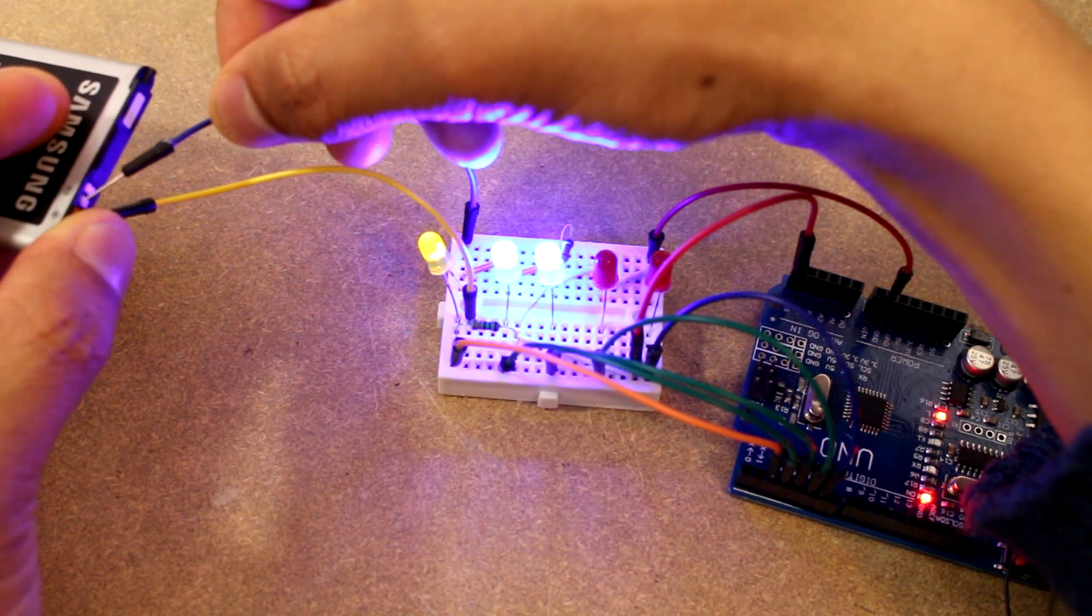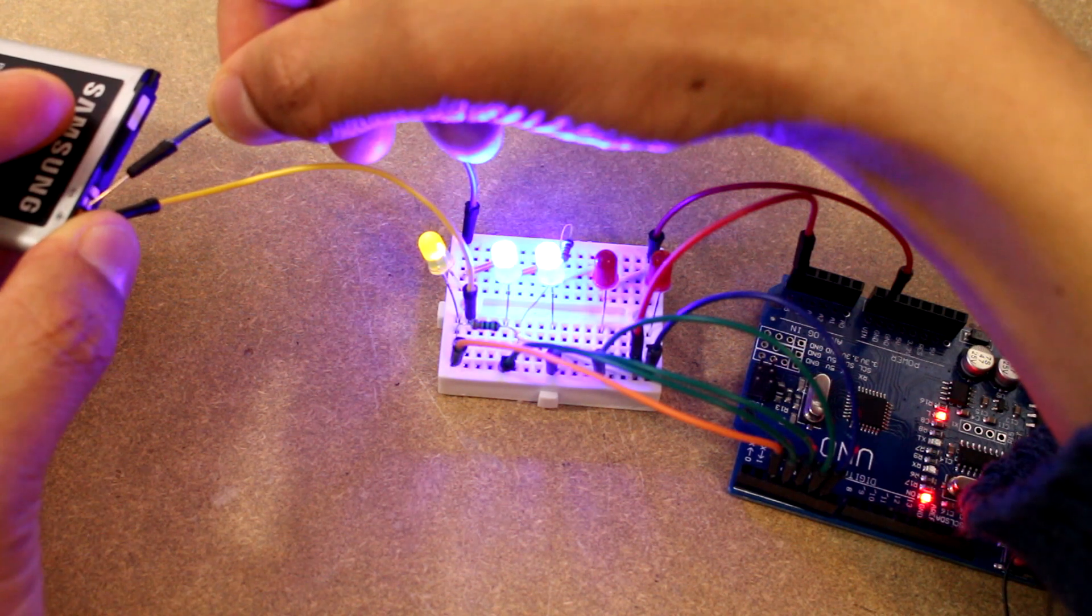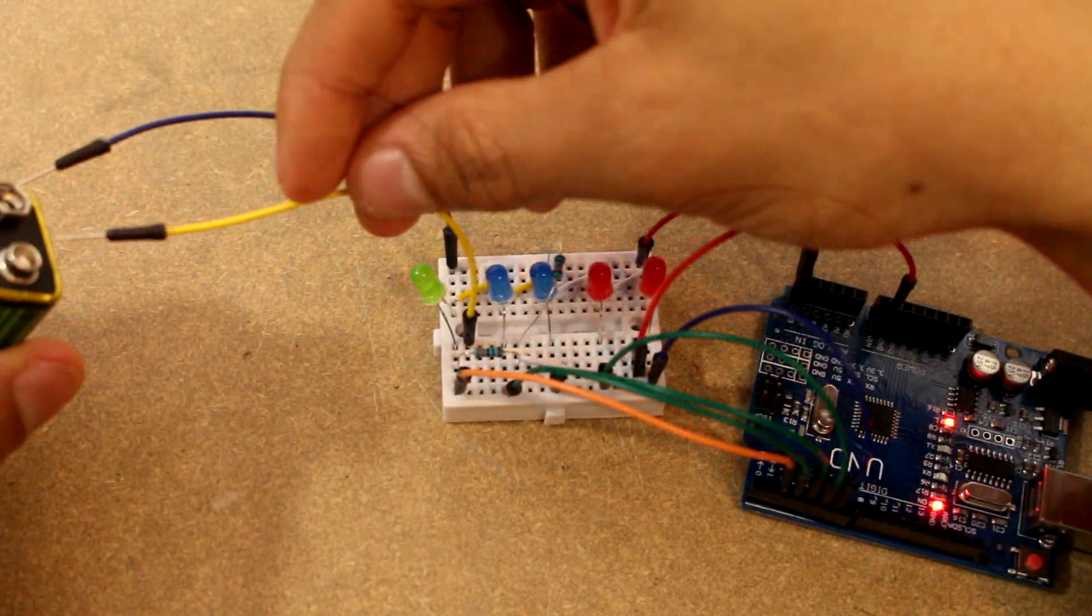We can also test out a 9 volt battery which turns on all the lights because it goes way over the max which is 5 volts.